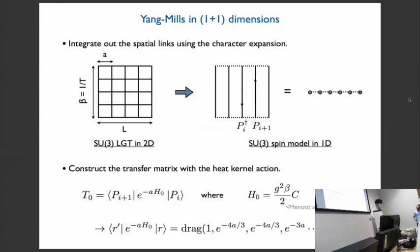Our starting point is the SU-3 Yang-Mills on the two-dimensional lattice. This is the spatial dimension with length L and temporal dimension with length beta, or one over T, with the lattice spacing A. In this case, we can solve the theory exactly by integrating out spatial links using character expansion. And the result is this effective interaction of Polyakov loops. This is basically a SU(3) spin model in one dimension. And just as in the Ising model in one dimension, we can construct a transfer matrix, which in this case is just the probability amplitude for the two Polyakov loops at i and i plus one to be in some group elements of SU-3.